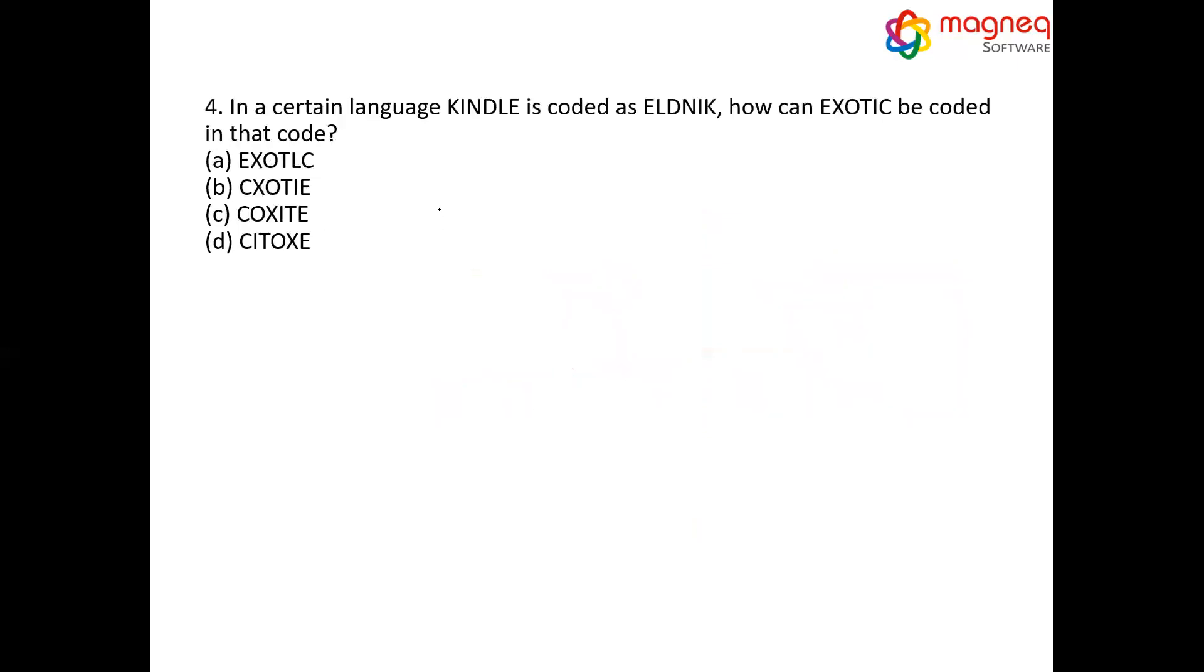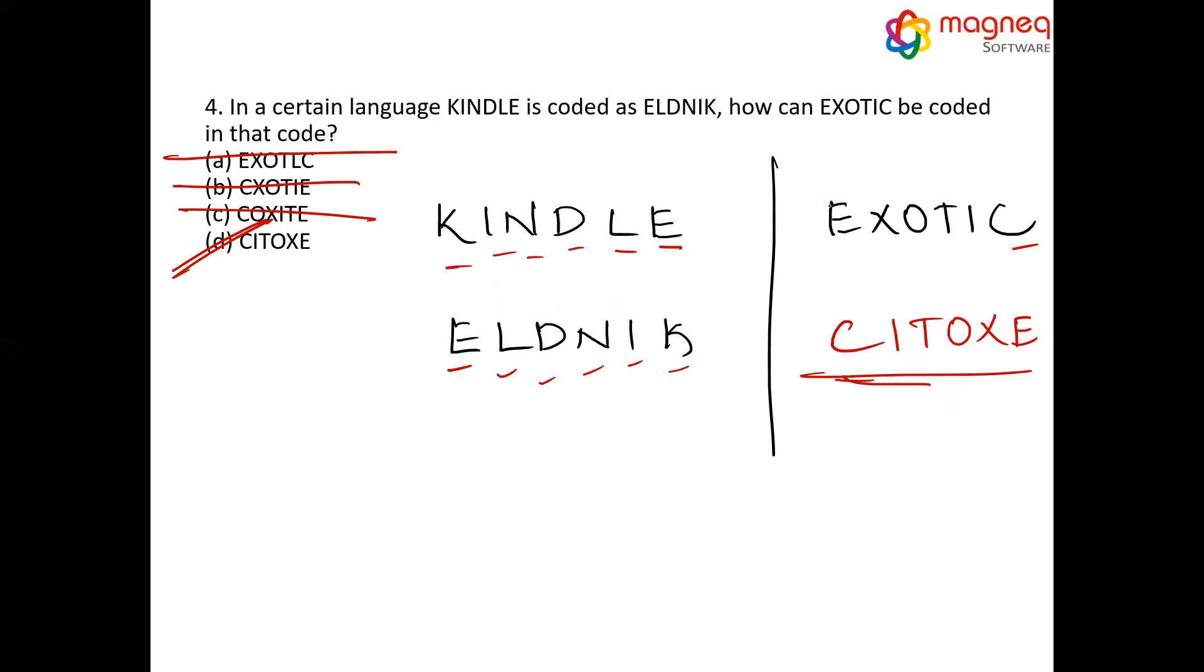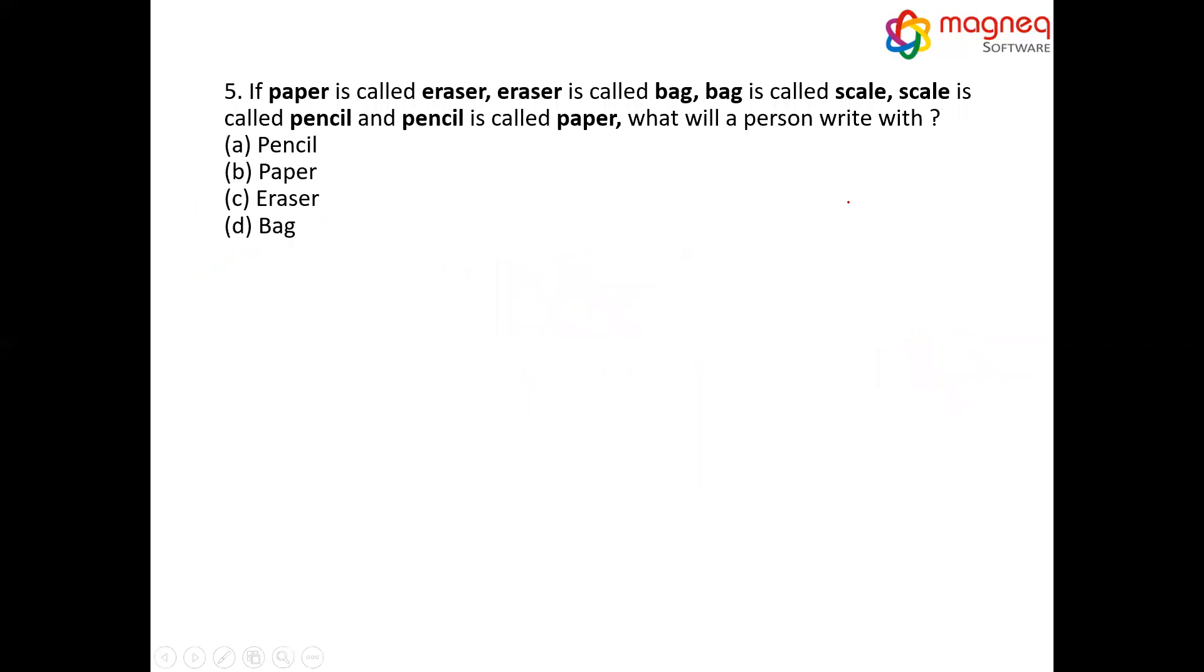Moving forward to the next question. What is the answer for this question? KINLEY is coded as E, L, D, N, I, K. What is the code for EXOTIC? If you clearly observe E, L, D, N, I, K - the alphabets are arranged in reverse order. Similarly, C will come next to C, I. I can eliminate option A because it is starting with C. I can eliminate option B also starting with C, I. Can I fix my answer as option D? No need to calculate anything. C, I, T, O, X, E. Answer is C, I, T, O, X, E.